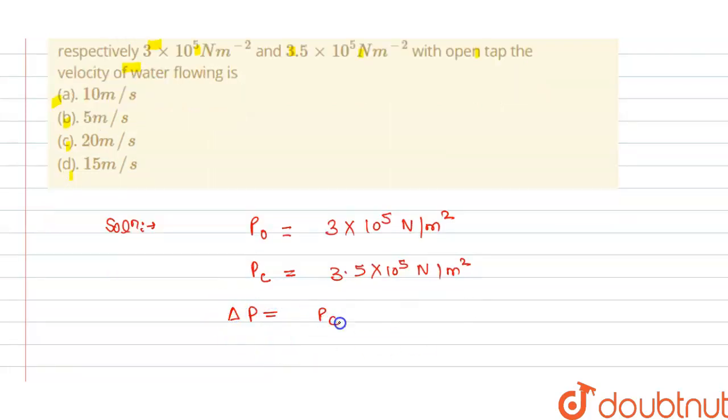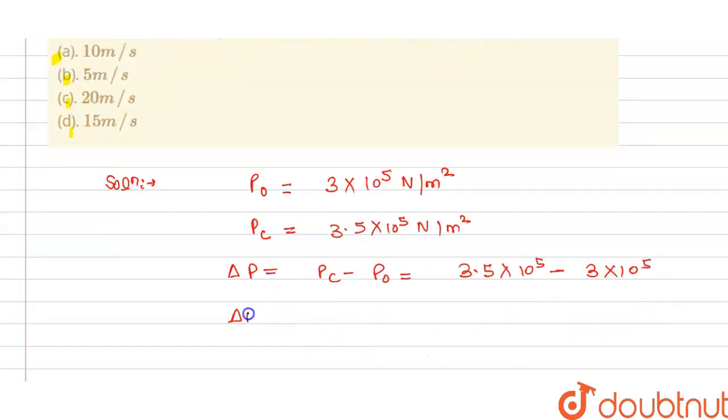So change in pressure ΔP equals P_closed minus P_open, which is 3.5 × 10^5 minus 3 × 10^5. We get ΔP equals 0.5 × 10^5 N/m².